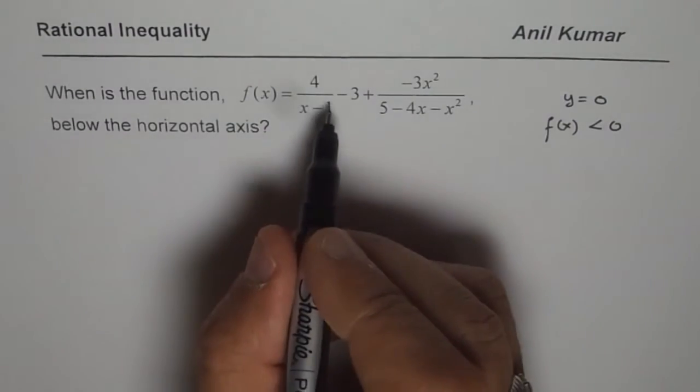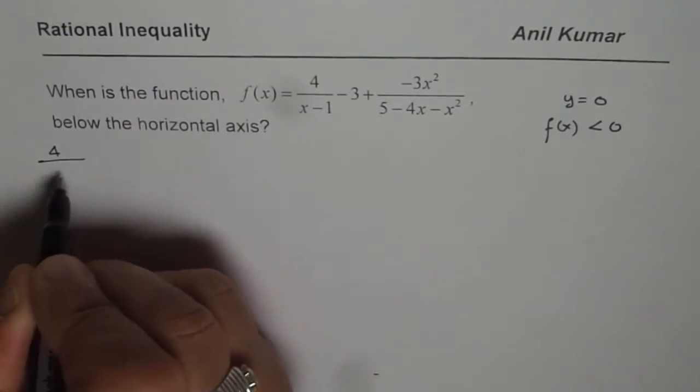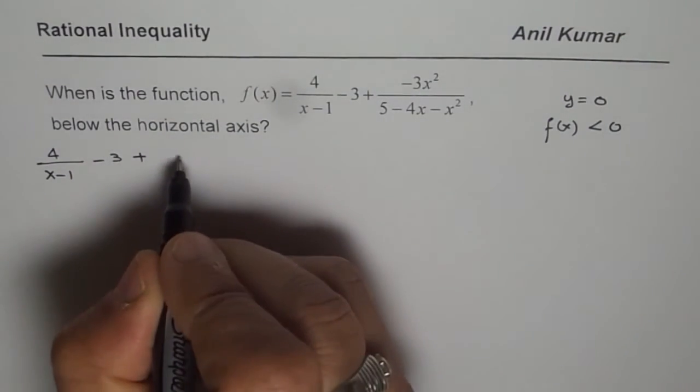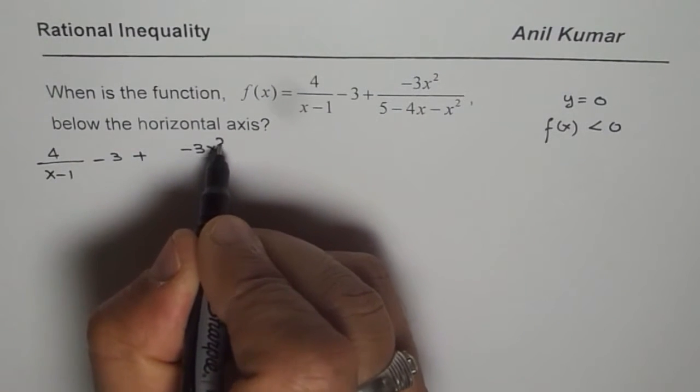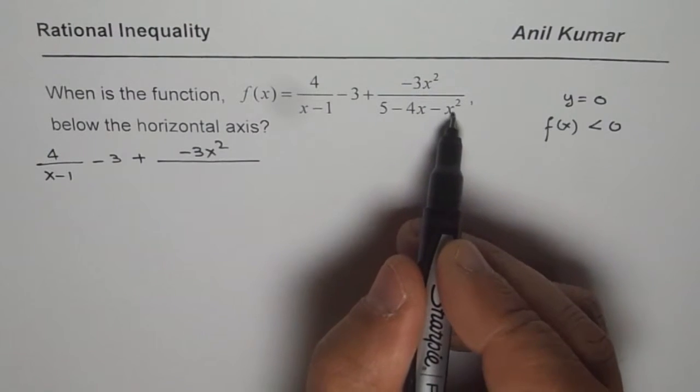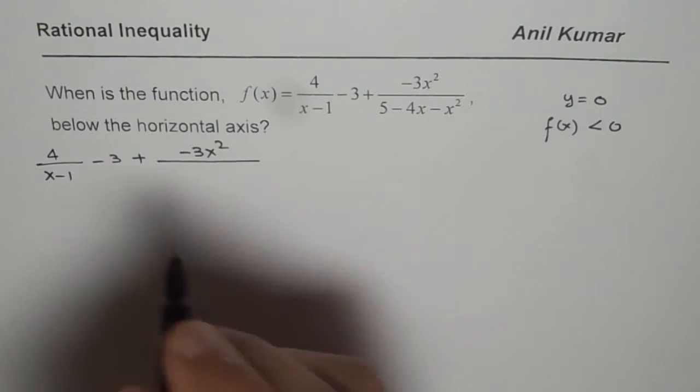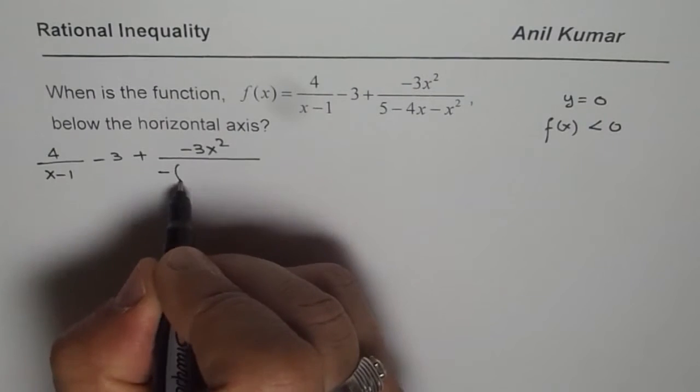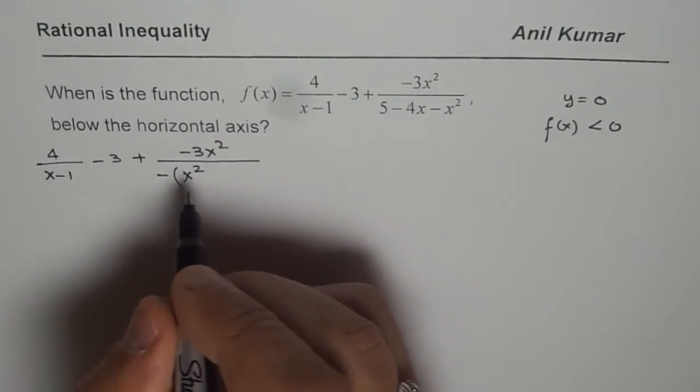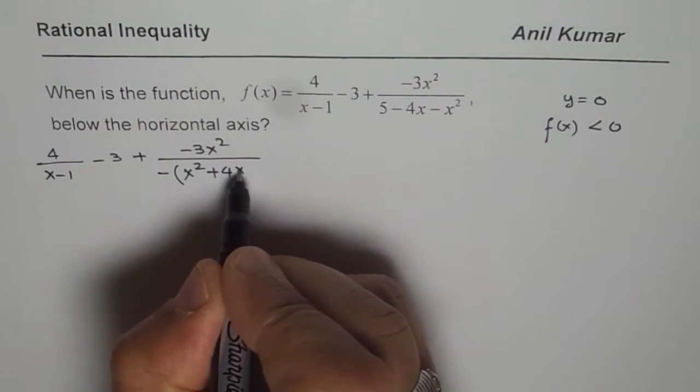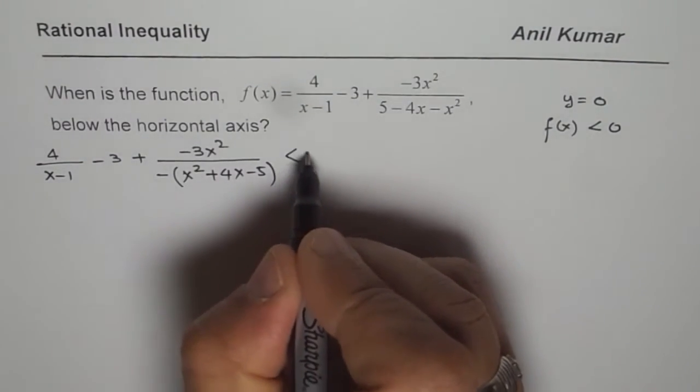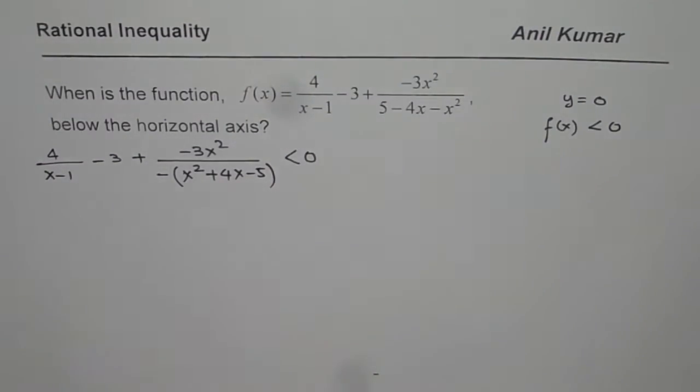So let us begin by copying this question. It is 4 over x minus 1 minus 3 plus minus 3x squared divided by 5 minus 4x minus x squared. Let me rearrange all this and I will take minus common and write them in order of decreasing exponents for x. x squared plus 4x minus 5. And that should be less than 0. This is the inequality we are going to solve.